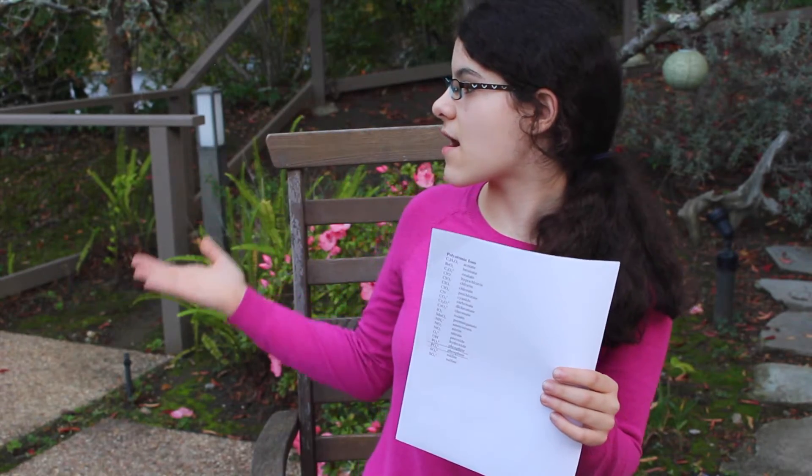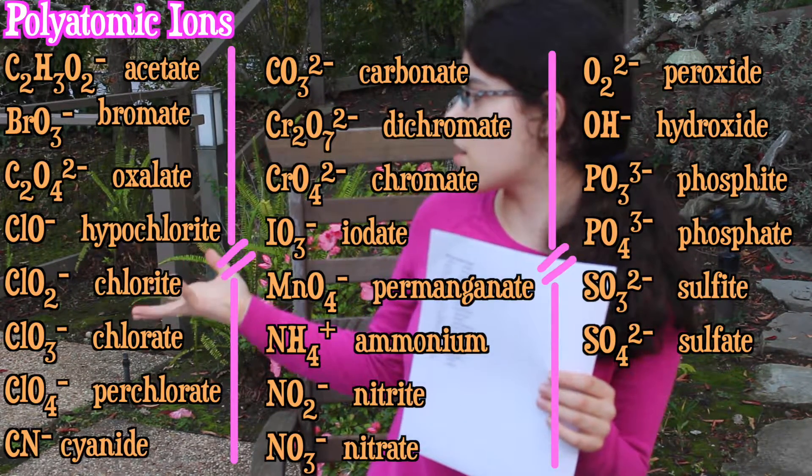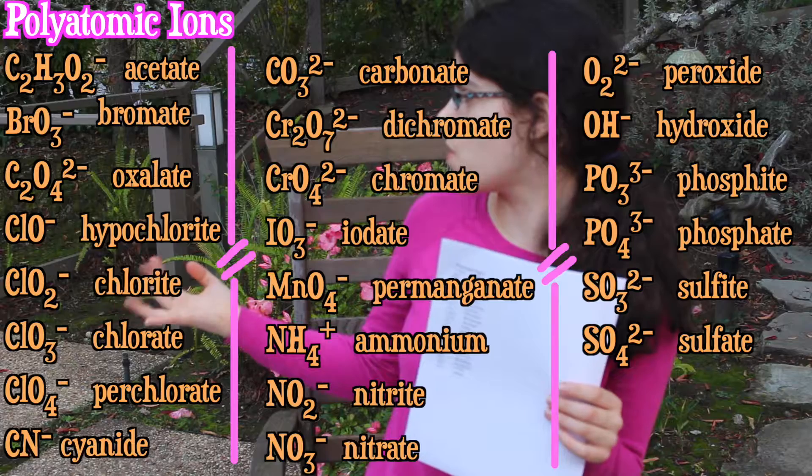Number four is that polyatomic ions act as a unit. Here is a sheet of polyatomic ions. The fifth rule for transition metals: you have to show the charge of the cation as Roman numerals, because sometimes they can be a little confusing without them. For example, iron (Fe) with Roman numerals 2 or 3.